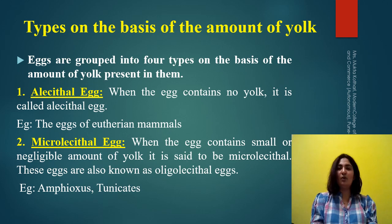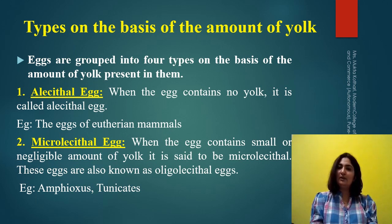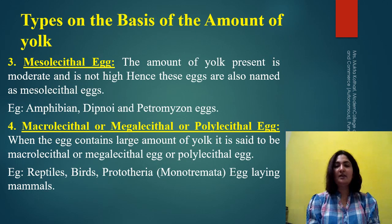So if the amount of yolk is very small or negligible, those type of eggs will be known as microlecithal type of eggs. This type is also known as oligolecithal type of eggs. The example of this type is amphioxus or tunicates.